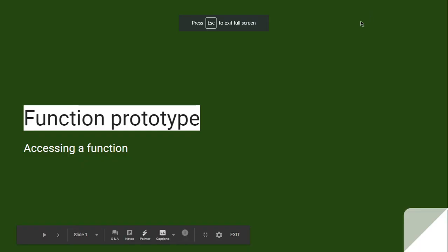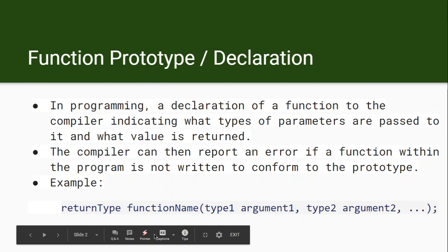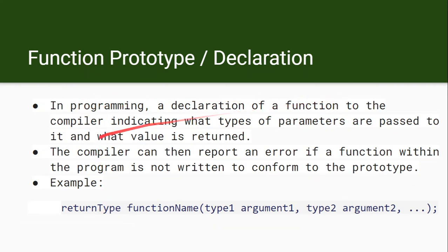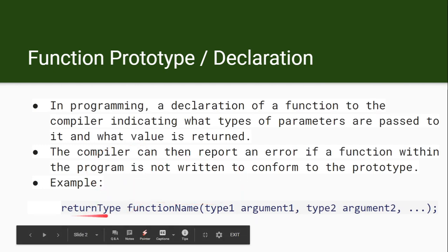In this video we are going to see about the function prototype. A function prototype is the declaration of the function, telling the compiler that a function is present in the program. The syntax includes the return type, function name, and parameter list — for example: type1 argument1, type2 argument2 — and it must end with a semicolon.